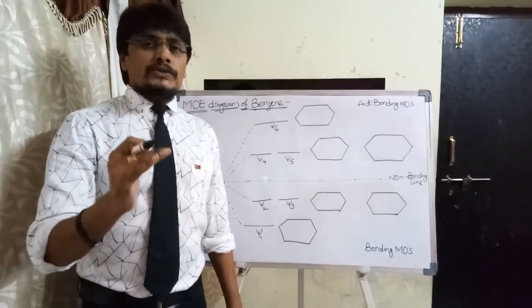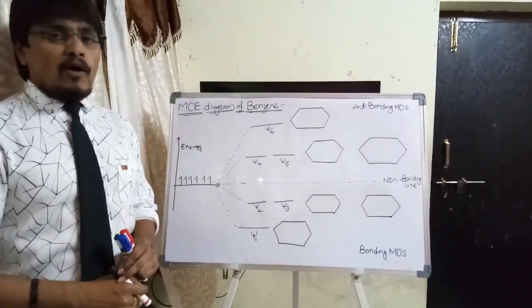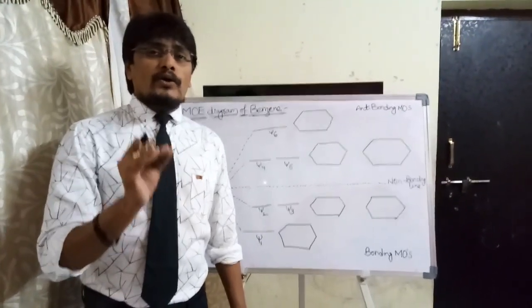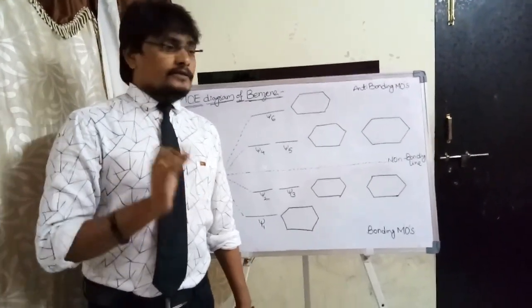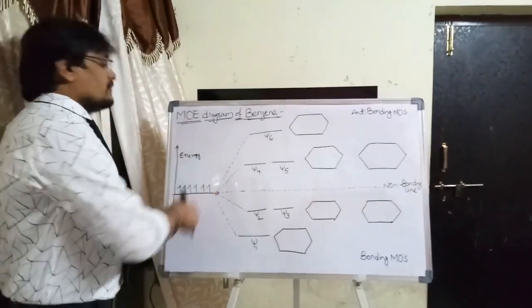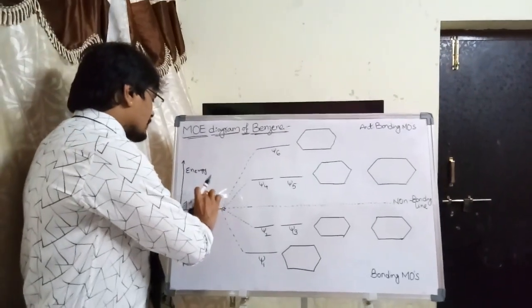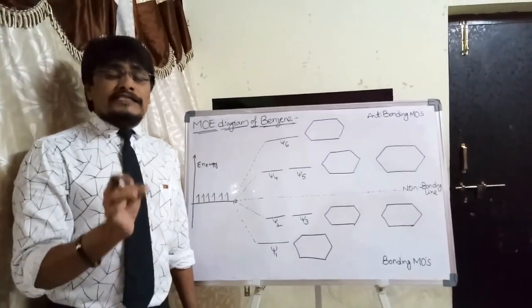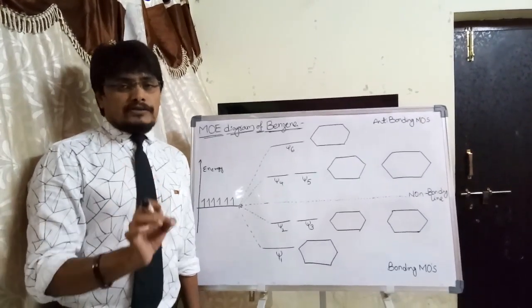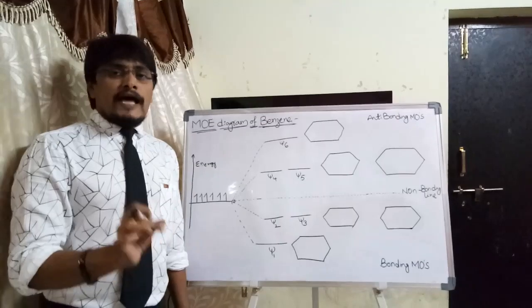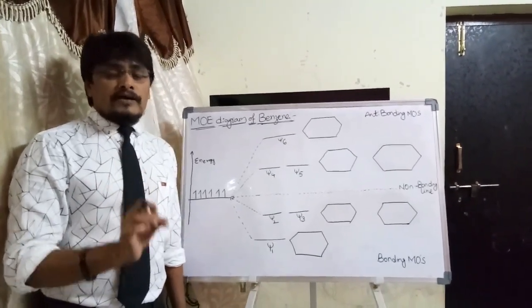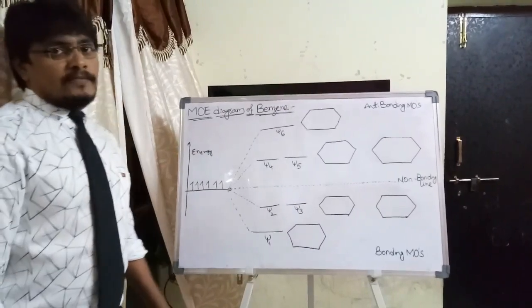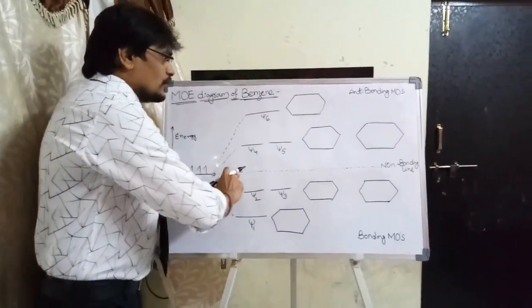Based on that relationship between node and energy, we are going to discuss the molecular orbital energy diagram of benzene. The benzene molecule comprises six pi electrons, meaning six p electrons, because the six pi electrons are part of six p orbitals of the benzene molecule. Hence, six p atomic orbitals give rise to six molecular orbitals. This is the non-bonding line.